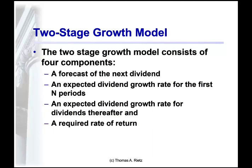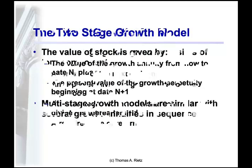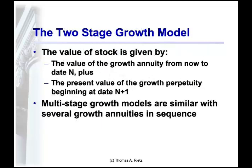If you value that continuing growth in dividends as a growth perpetuity, discount it and the intervening dividends at a required rate of return, and add them up, you'll have the value of the stock today. That creates a growth annuity between now and the forecast period at one growth rate, and then a growth perpetuity after that at another growth rate.